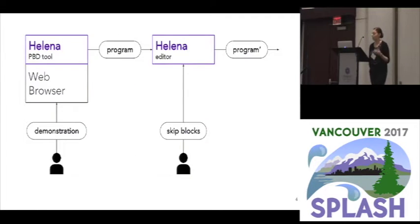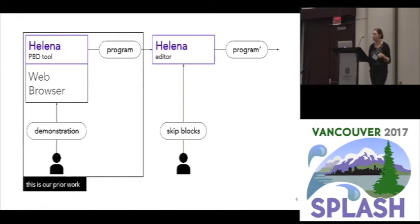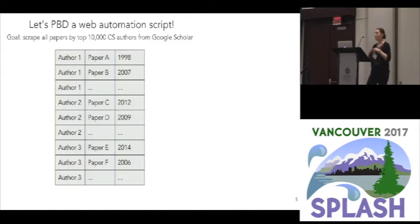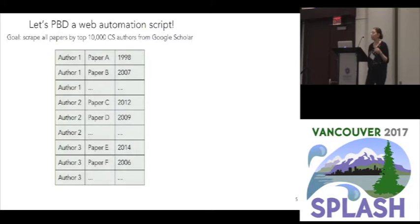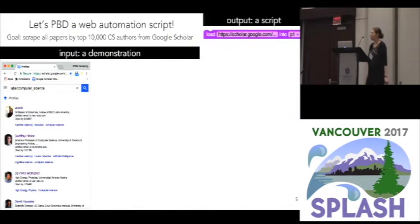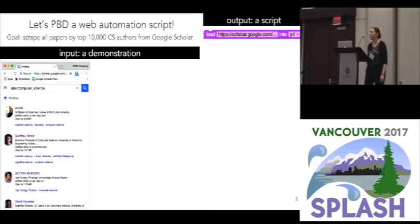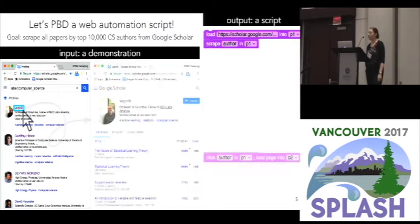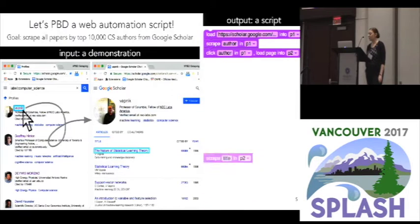This is part of a longer line of research on the Helena web automation language and the associated programming-by-demonstration tool. I'll take a quick moment to explain how we go from demonstration to program. Say you want to build a script to scrape all the papers by the top 10,000 ACM authors from Google Scholar. Basically, you show us how you would scrape the first row of that dataset, and we build the script that's going to scrape the next three million rows. So we load up that first page — the tool is already building up a representation of what you've done — and we grab some information about that first author, then click on the author to get to the list of papers.